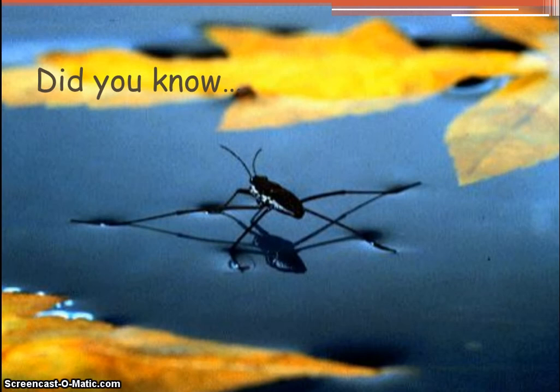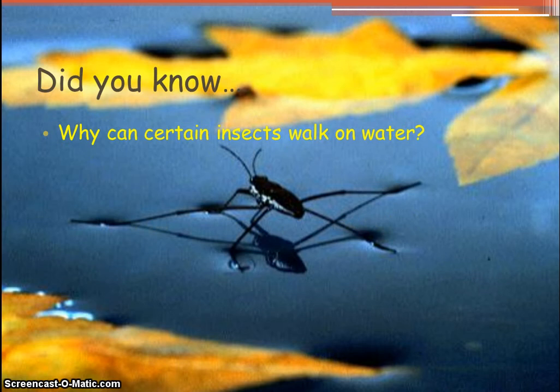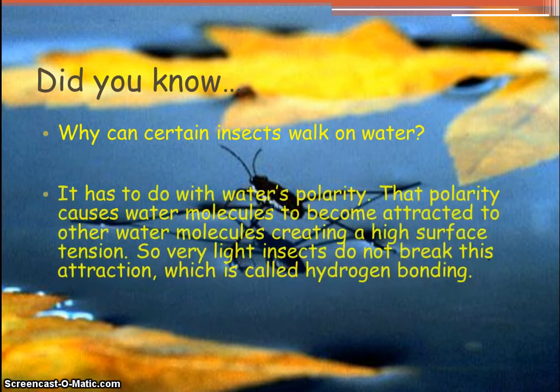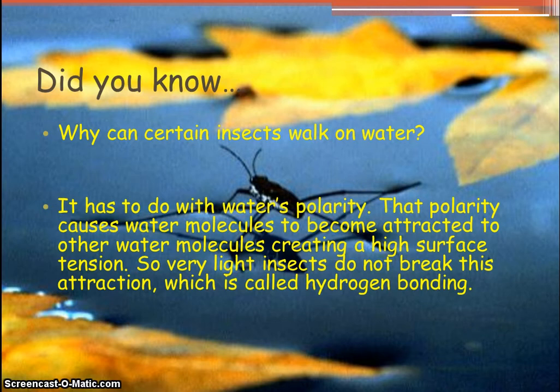Did you know? Why can certain insects walk on water? Well, it has to do with water's polarity. That polarity causes water molecules to become attracted to other water molecules, creating a high surface tension. Because of this, very light insects can actually move on the water without breaking those attractions. Those attractions of molecules is called hydrogen bonding.